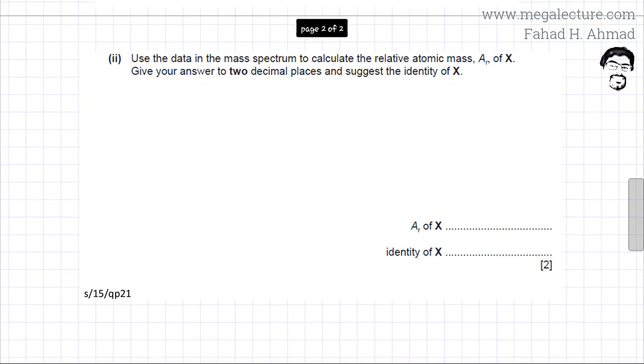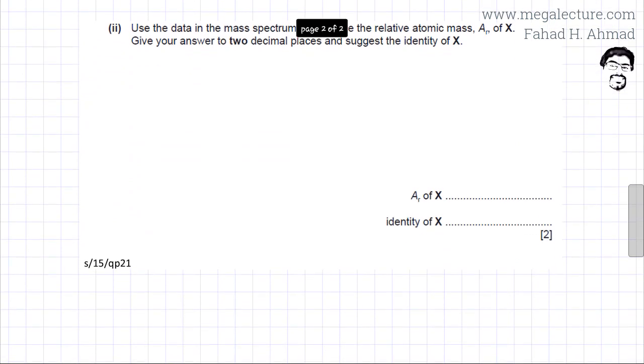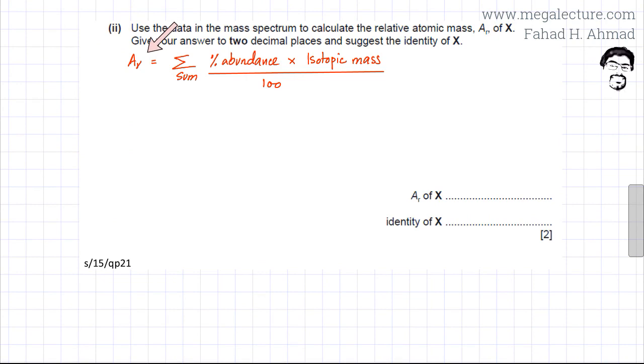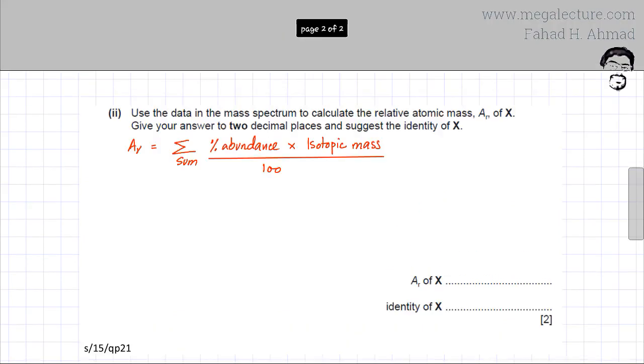That part states that use data in the mass spectrum to calculate the relative atomic mass Ar of X. Give your answer to two decimal places and suggest the identity of this element X. So I'm going to use this formula for calculating the relative atomic mass which is that I'm going to sum up the product of the percentage abundance and the isotopic mass divided by 100.